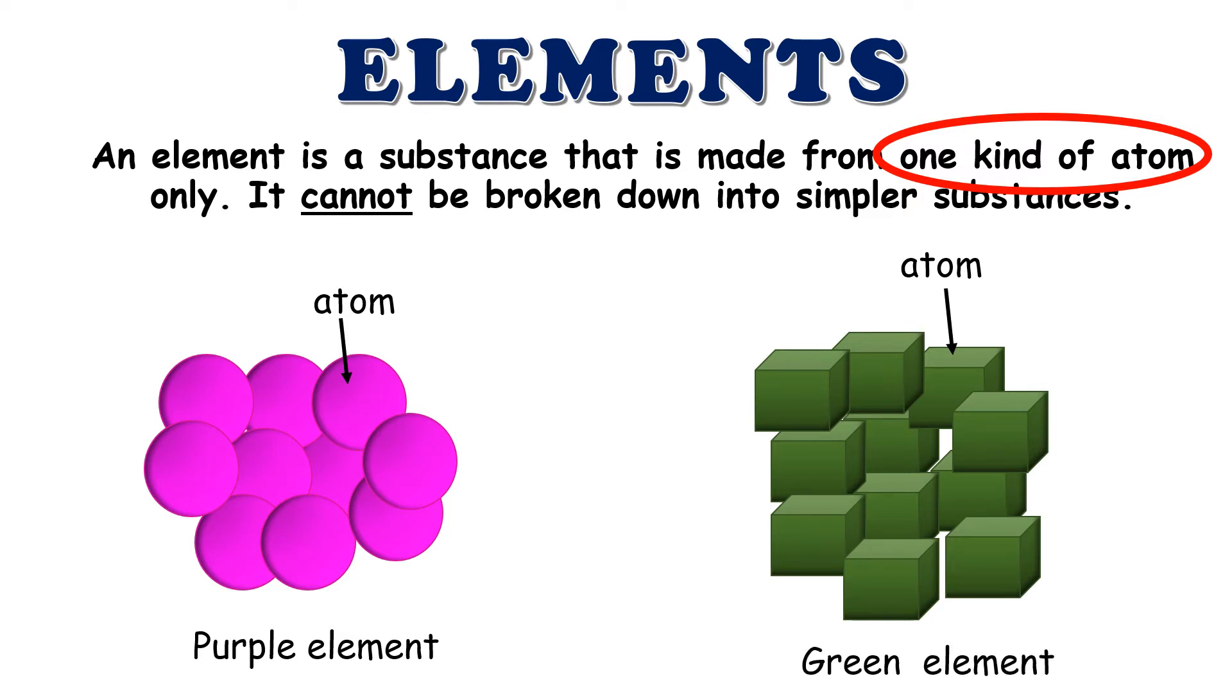As you can see, each element should have the same color, shape, and sizes because elements should be made from one kind of atom only, regardless of how many it is, as long as it is only made up of one kind of atom.